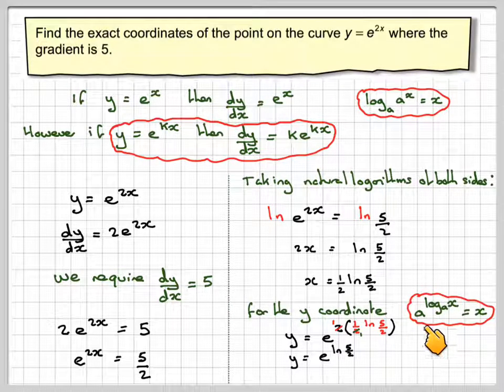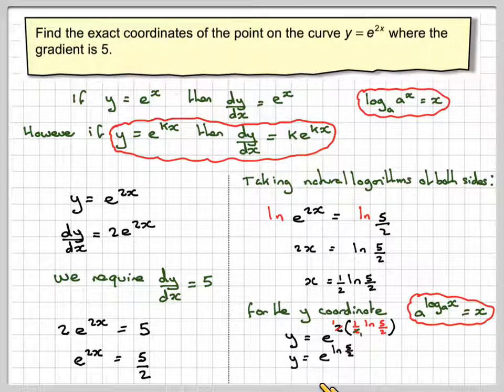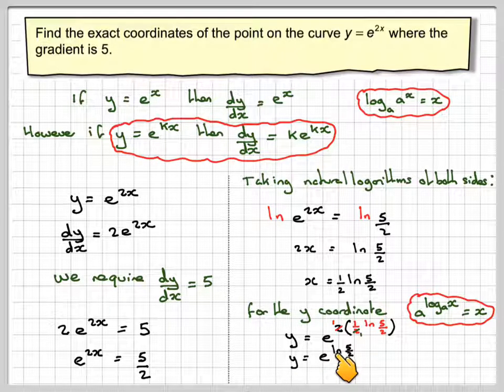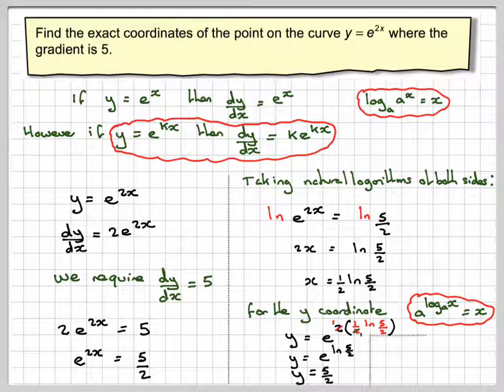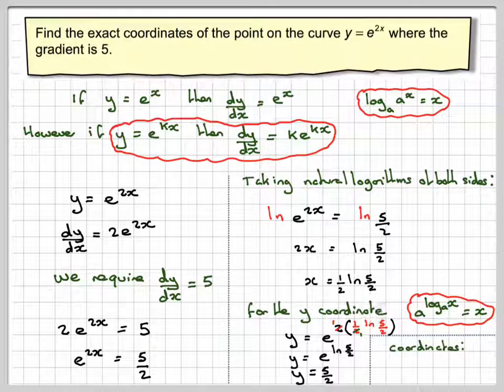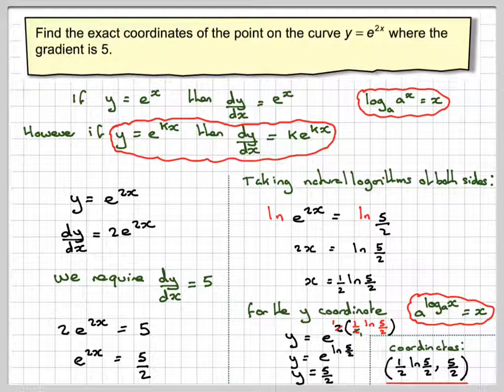Now, we have this rule that a to the log to the base a of x is equal to x. We've got this situation here. a is e, and log to the base a is ln, which is log to the base e of 5 over 2. So we're just going to get that y is 5 over 2. So therefore the coordinates are going to be the x-coordinate, which is a half ln of 5, comma 5 over 2. And we found the exact coordinates rather than the calculated value.